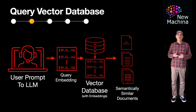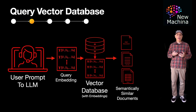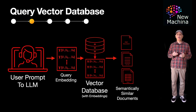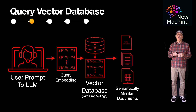When we query the vector database using similarity searches, the vector database is not doing keyword matching. Instead, it's looking for semantically similar text. The aim is to understand the meaning and context behind the query, providing more accurate and relevant results. I have a video coming soon where I go into detail on popular similarity search algorithms. I also have another video on embeddings — check these out if you're interested.